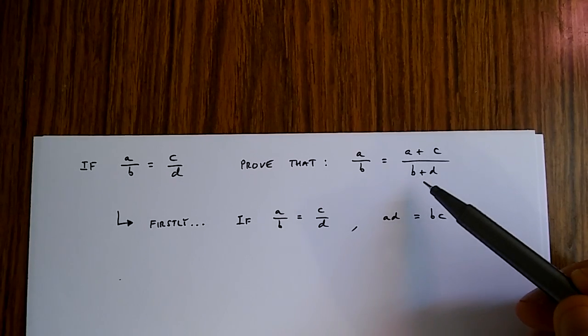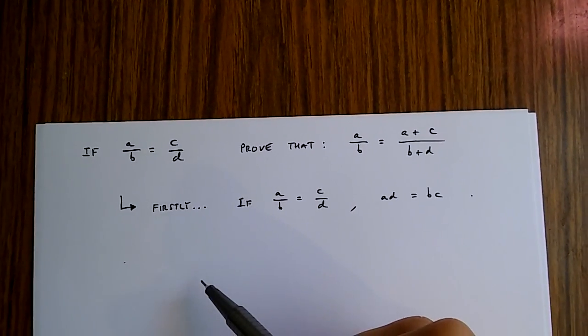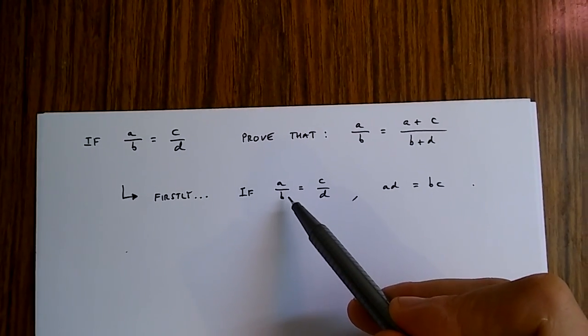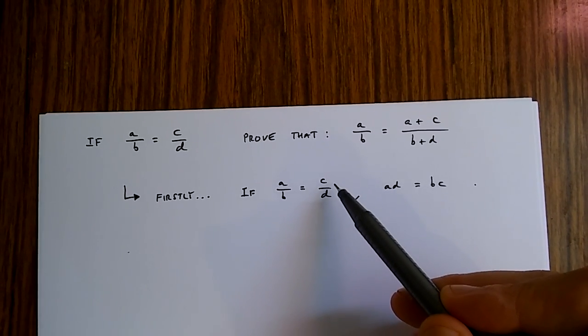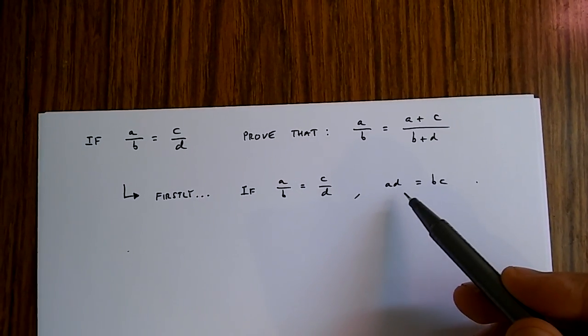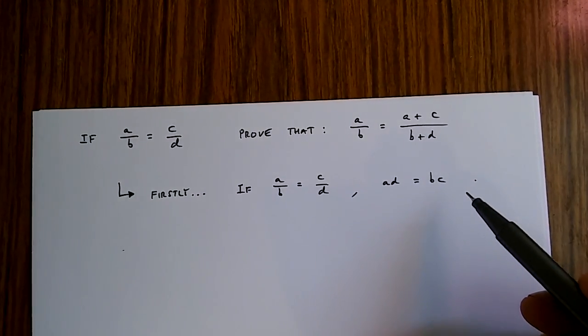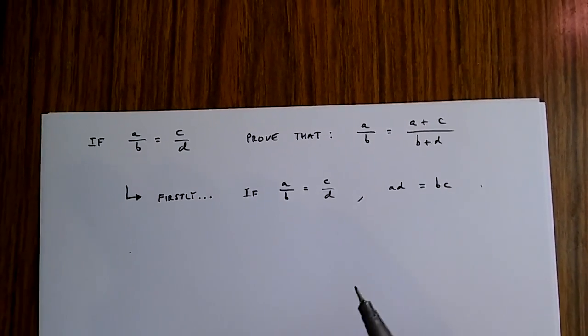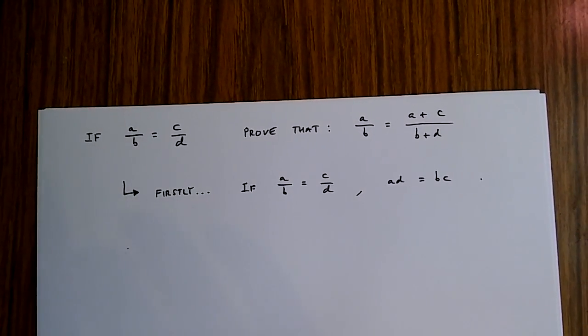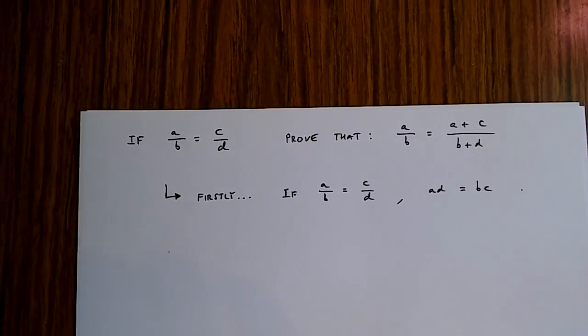Now to prove this, we first need to know that if a over b is equal to c over d, then ad is equal to bc. The rest is simply mathematical trickery. Let me show you.